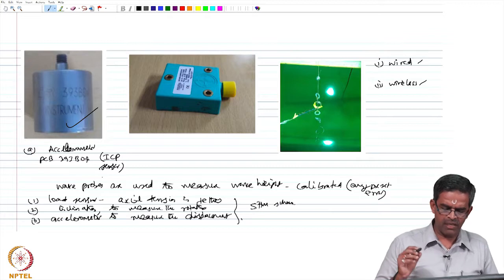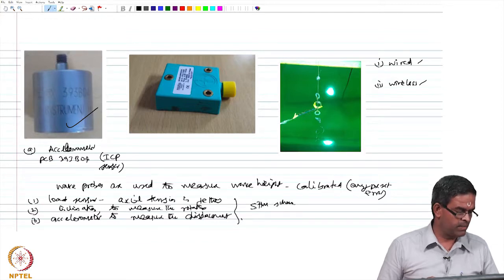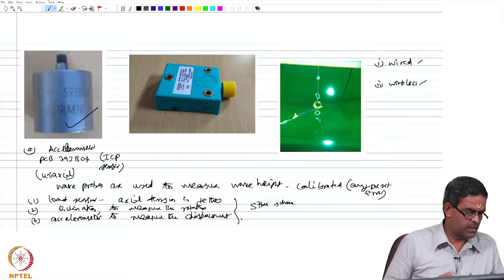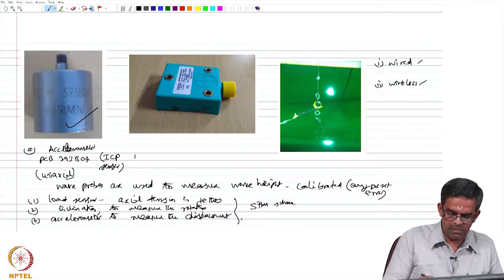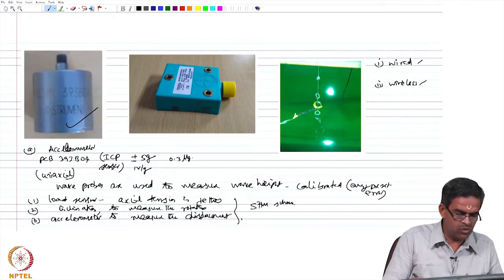The specification of the accelerometer - this is 393B04 ICP sensor - it is a uniaxial sensor, the range is ±5g, the sensitivity is 1 volt per gram, and the noise performance is about 0.3 μg per root hertz.